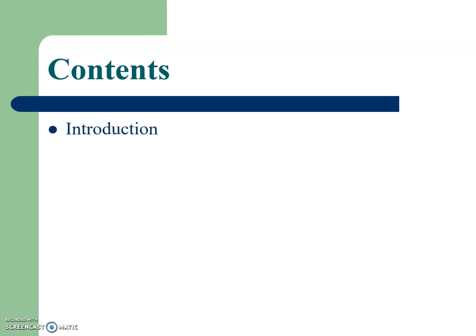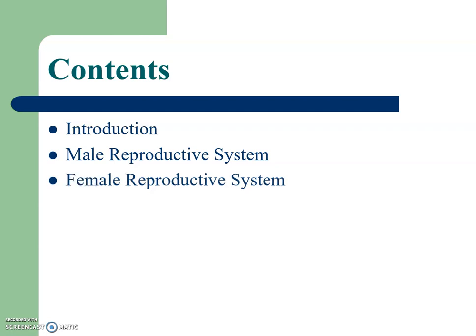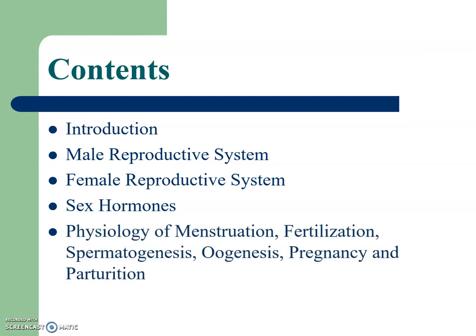In this chapter, we will learn an introduction about the reproductive system and various terminologies associated with it. We will study the anatomy and physiology of the male and female reproductive systems, the physiology of sex hormones, menstruation, fertilization, spermatogenesis, oogenesis, pregnancy, and parturition.